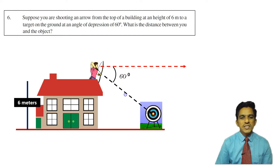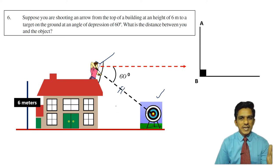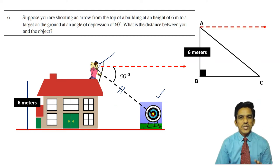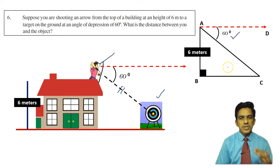You have to find the distance between the target and the shooter. That means you have to find this value. Let us draw the diagram. AB is the height of the building, which is 6 meters. C is the target. We have to draw a horizontal from A. A is the shooter. The horizontal is AD. Now the angle of depression is 60 degrees.